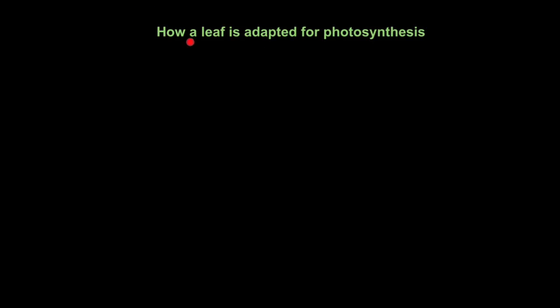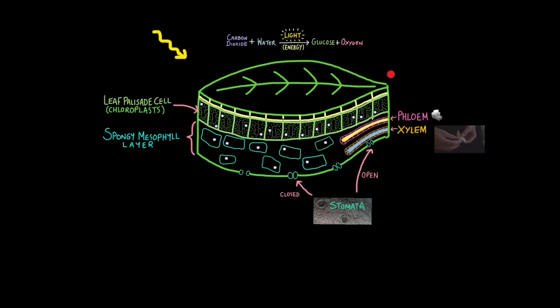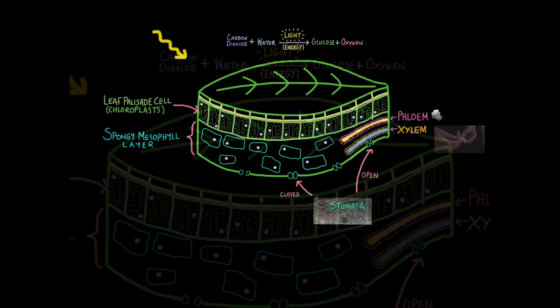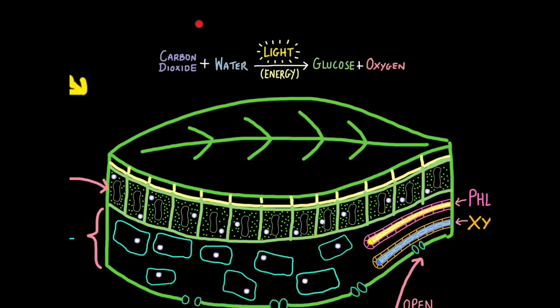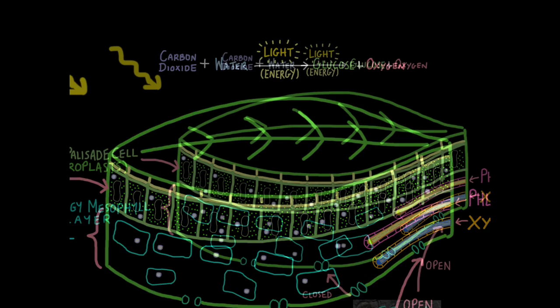So now let's look at how a leaf is adapted for photosynthesis and gas exchange. This is a diagram of a leaf in cross section. I've drawn it thicker obviously than usual so you can see what's going on inside. If you remember from the photosynthesis equation, a plant will need carbon dioxide and water under the influence of light energy and will produce glucose and oxygen. All these ingredients will need to be transported inside, to and from the plant. And plants have developed many adaptations to help them do this.